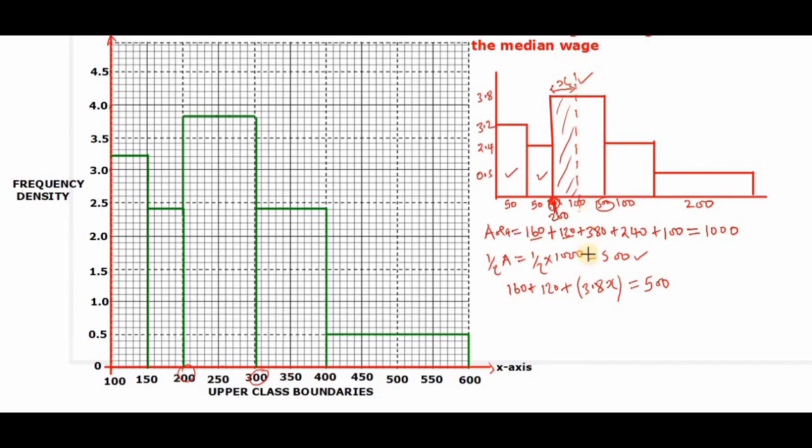And all of this added should give us 500. So remember the vertical line divides the histogram into halves, so that this left hand side should give us a total area of 500, and the right hand side also should give us 500.